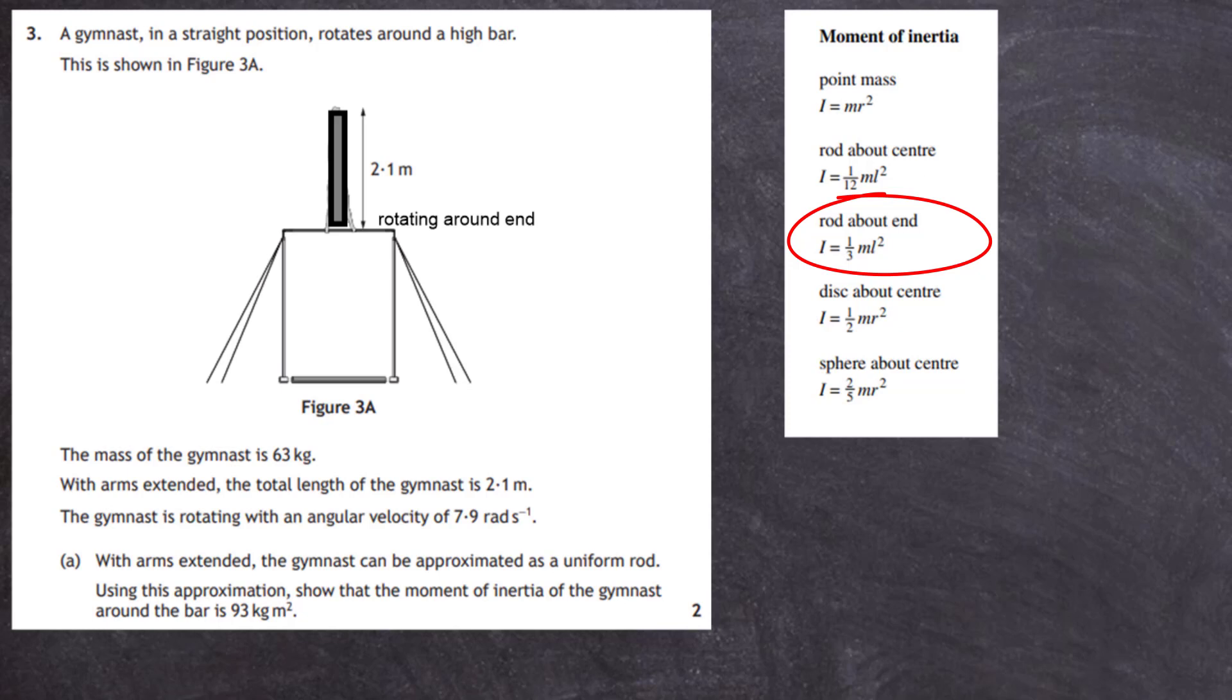So all we have to do is put that down into our notebook. The moment of inertia I is equal to one third times the mass times the length squared of the rod. Put our numbers in then. One third times the mass, and the mass is going to be 63 kilograms, multiply by the length which we know is 2.1 and we have to square that. And we do that in our calculator we end up with 93.